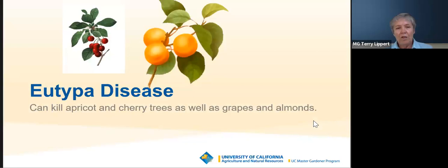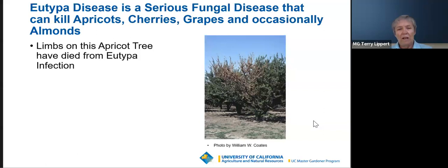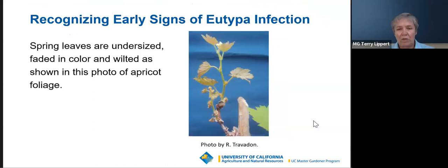We're starting with eutypa disease. We scheduled this webinar in August because one of the first takeaways is that if you've got apricot or cherry trees, you should be doing your pruning on them before the end of this month. Eutypa disease is a fungal disease that, if left unmanaged, can kill your apricot and cherry trees. It's also a big problem in commercial grape growing, and occasionally it affects almonds. The photo is showing an orchard where an apricot tree has one of its limbs dying from the disease.